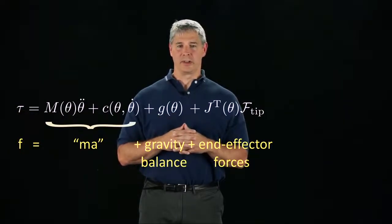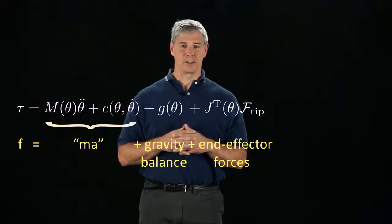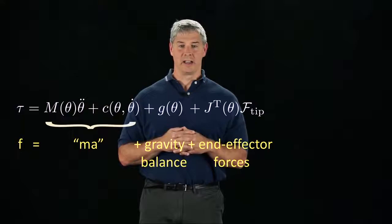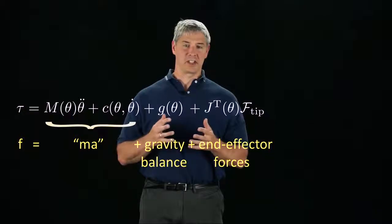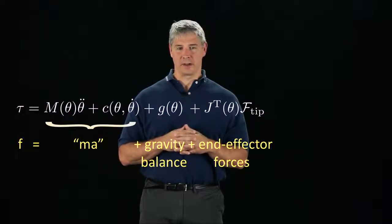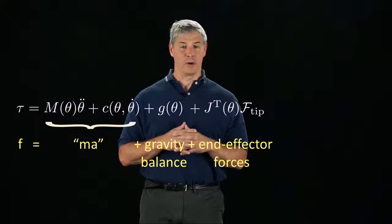Starting in the next video, we will learn another way to derive these same equations, beginning with the equation f equals ma for a single rigid body. This is called the Newton-Euler formulation of the dynamics. This formulation allows us to derive an efficient recursive algorithm, without differentiations, for computing the dynamics of open-chain robots.